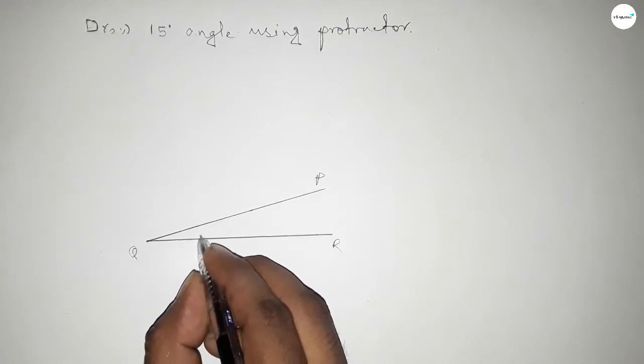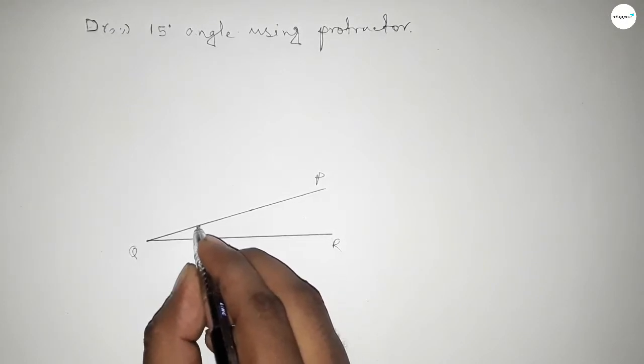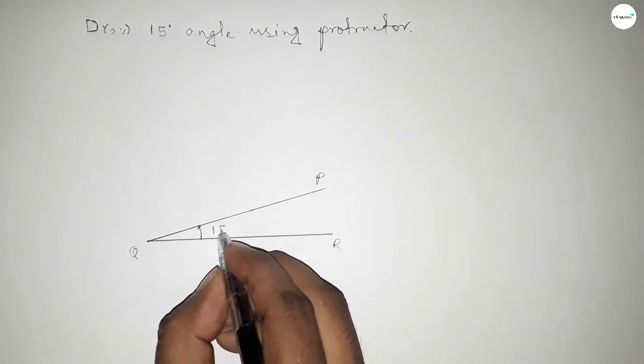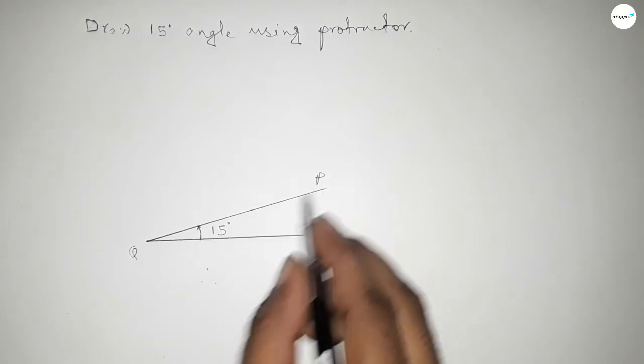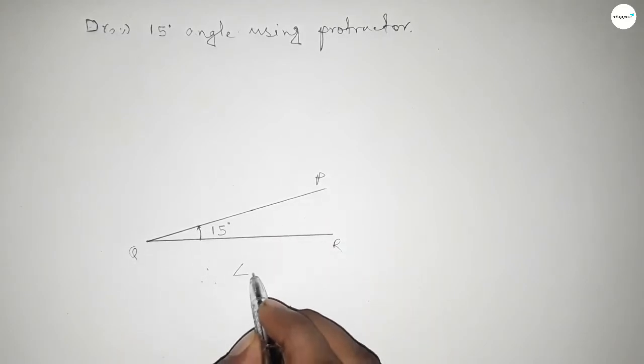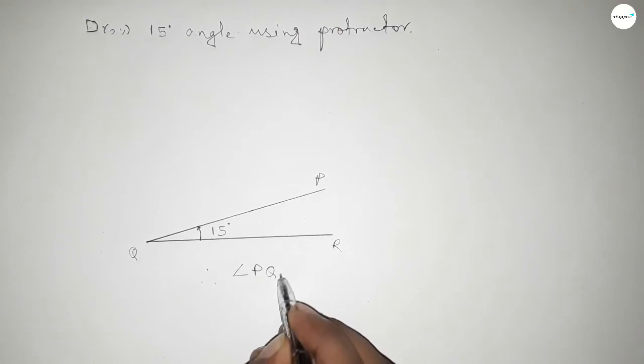So angle PQR equals 15 degrees. Therefore, angle PQR equals 15 degrees.